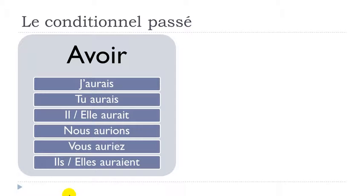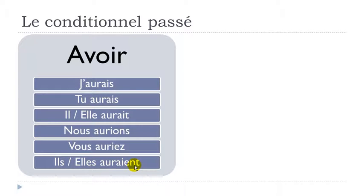A few pronunciation notes: the final S is not pronounced in j'aurais and tu aurais; the final T is not pronounced in il aurait; there's a liaison in nous aurions; vous auriez ends with the sound 'et'; and ils auraient — with A-I-E-N-T — is pronounced like 'aurais'. So phonetically j'aurais, tu aurais, il aurait, ils auraient all sound very similar.